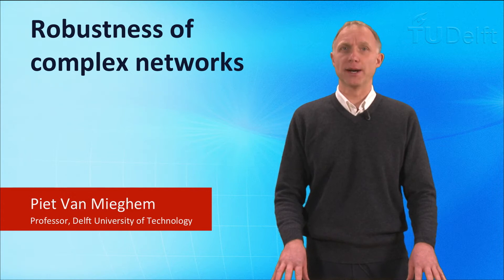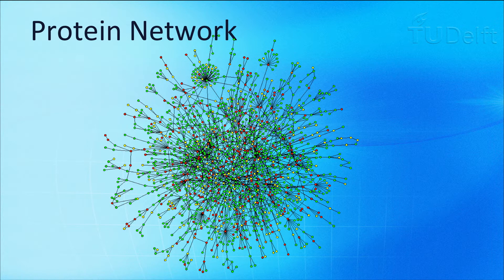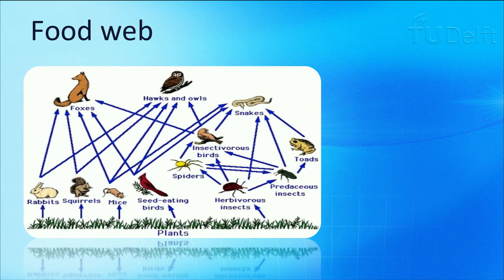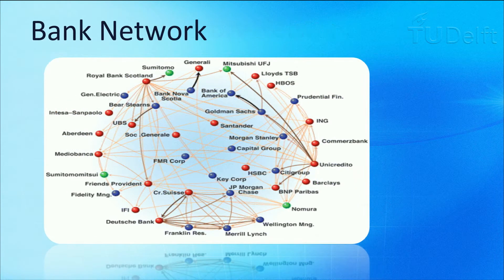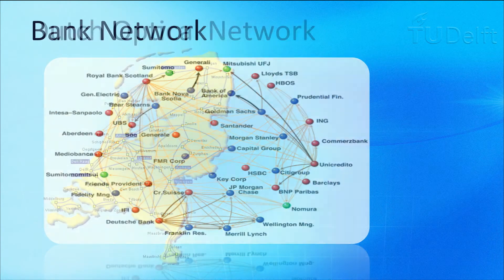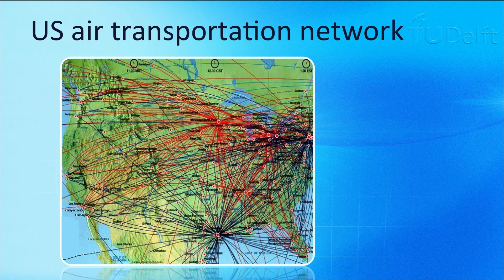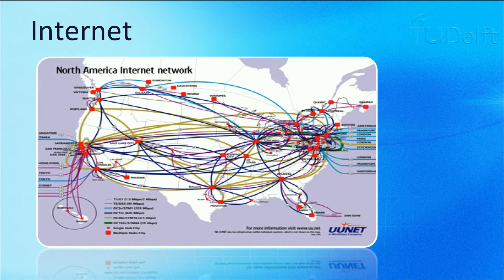Networks are everywhere, indeed. Here we see a network of a protein, a human brain, a food network, a genetic regulatory network, a network of financial institutions, the Dutch optical network, a US air transportation network, the US power grid, a part of the US internet.